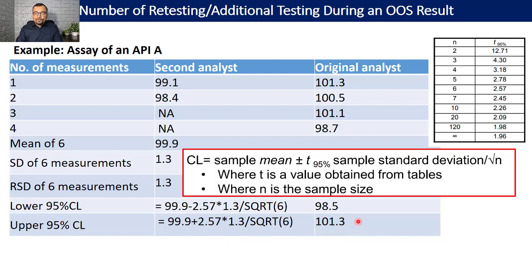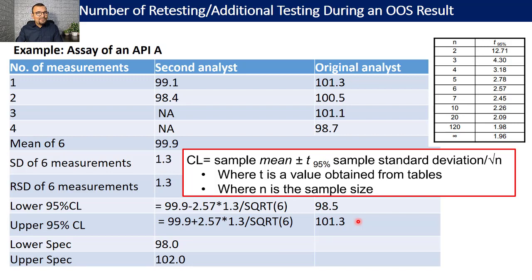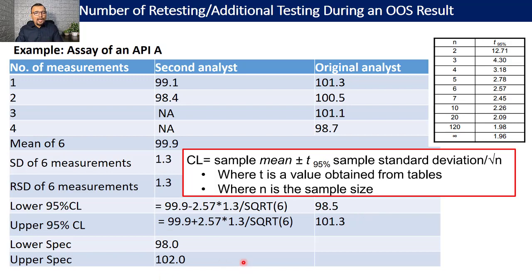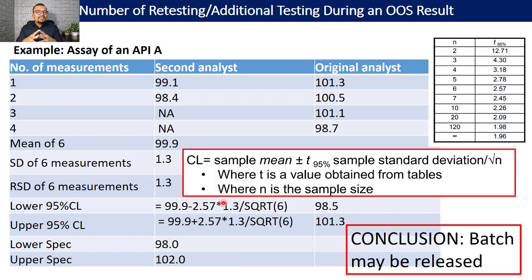Both the lower confidence limit (98.5%) and upper confidence limit (101.3%) are within the specification of 98.0 to 102.0 percent, and hence you can decide to release the batch. This is how you can evaluate results using statistical tools like percent RSD and confidence limits to make a batch disposition decision.